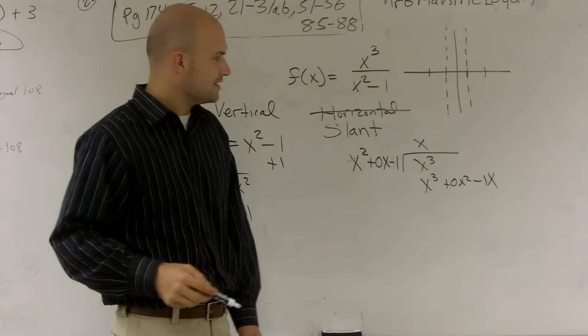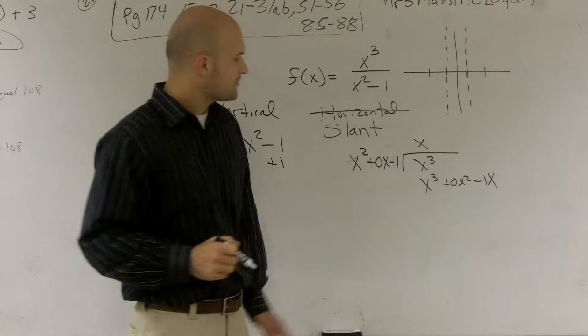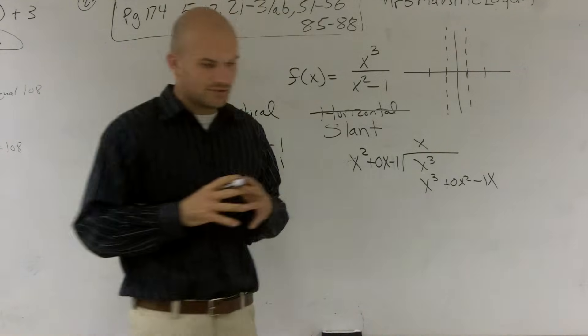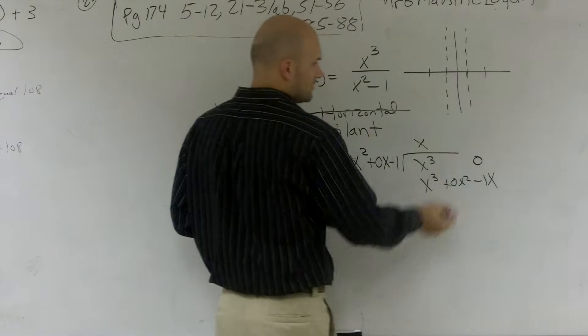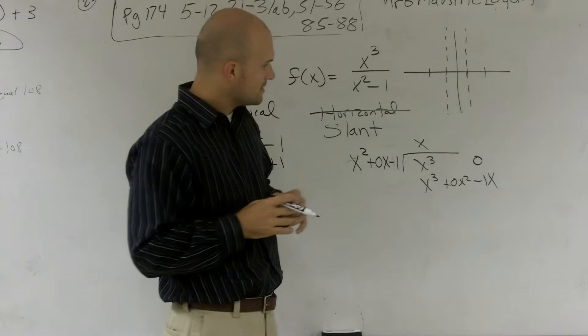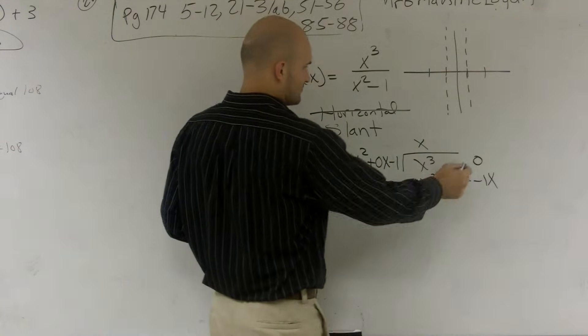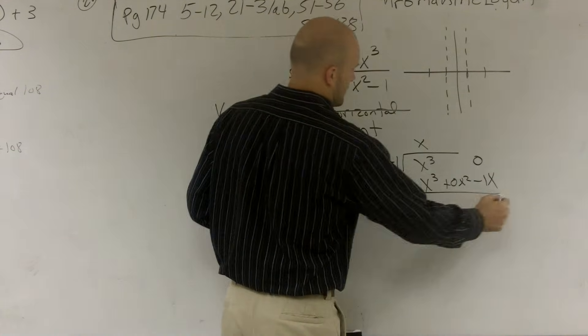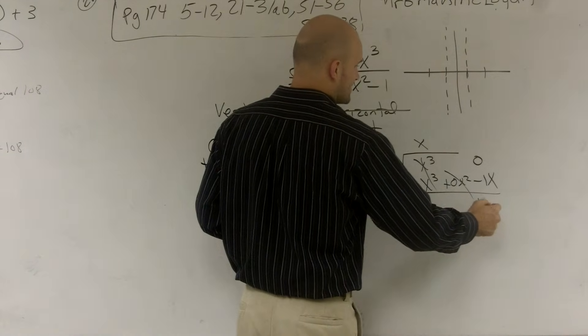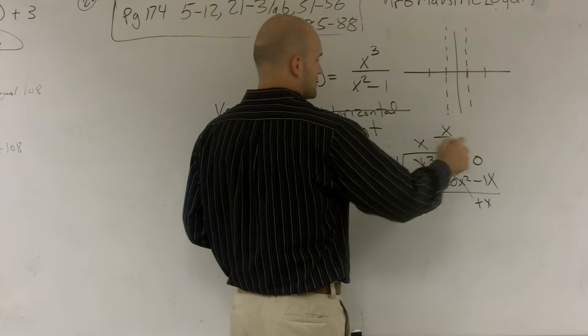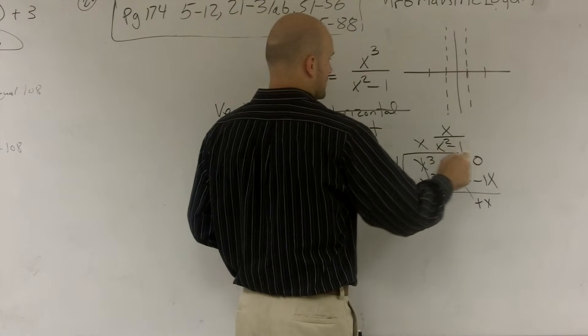Obviously, I have nothing left over here to bring down. So therefore, what you do is, so I'll have 0, right? So 0 minus, so that must cancel out. That's 0. 0 minus a negative 1 would give me a positive x. So x over x squared minus 1.